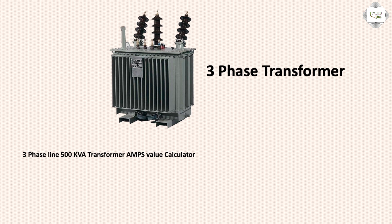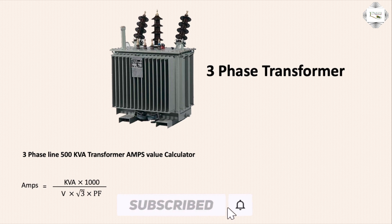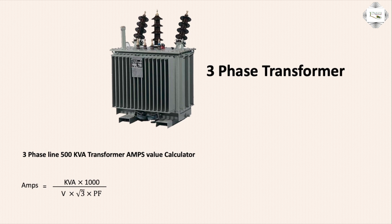For a 500 KVA transformer, we calculate the ampere value. The formula is: Ampere equal to KVA into 1000, divided by V into root 3 into PF. Here, V means voltage, root 3 means three-phase factor, PF means power factor, and KVA means kilo volt ampere. For this three-phase line, we have 500 KVA.